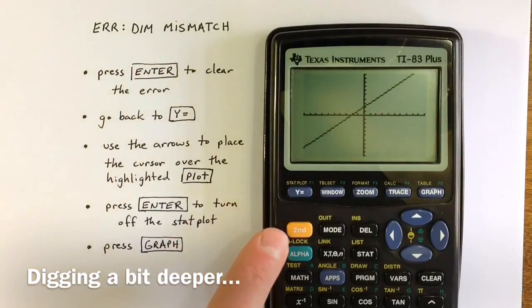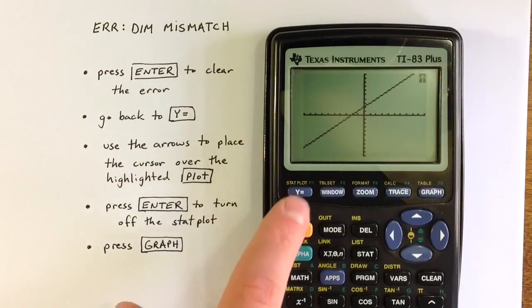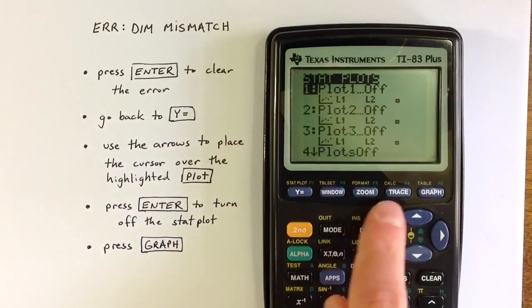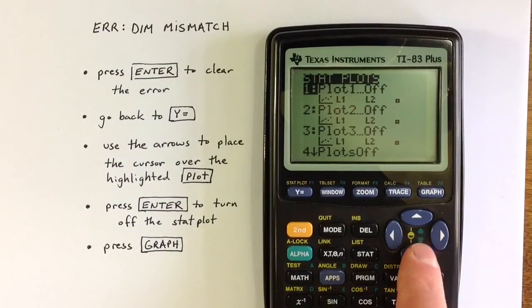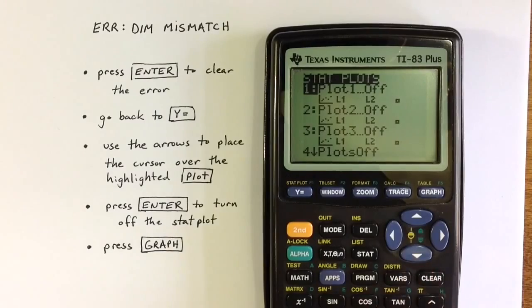The dimension mismatch error occurs when the stat plot that's turned on is trying to read from list 1 and list 2 or read from a pair of lists, but those lists don't have the same dimension, they don't have the same number of elements.